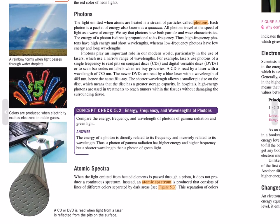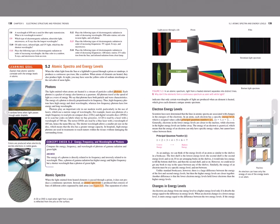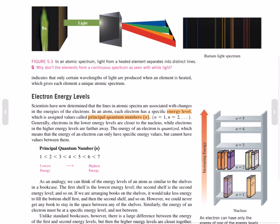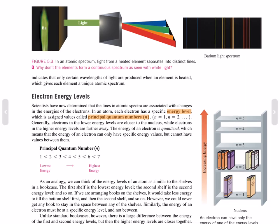Atomic spectra. When the light emitted from heated elements is passed through a prism, it does not produce a continuous spectrum. Instead, an atomic spectrum is produced that consists of lines of different colors separated by dark areas. The separation of colors indicates that only certain wavelengths of light are produced when an element is heated, which gives each element a unique atomic spectrum.